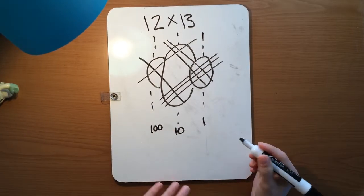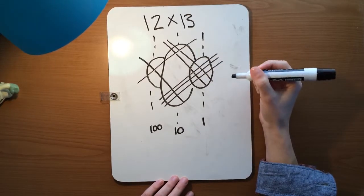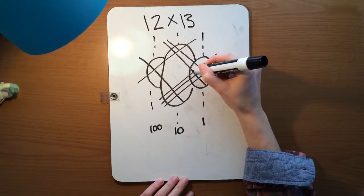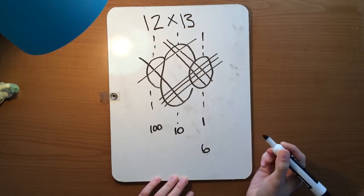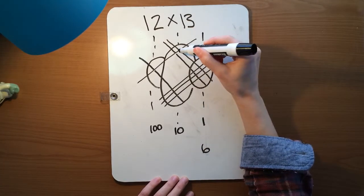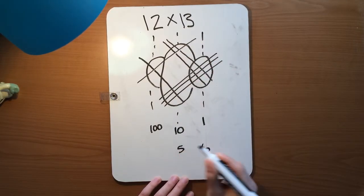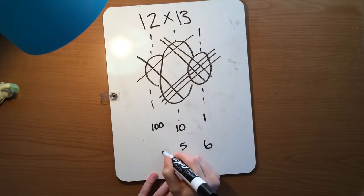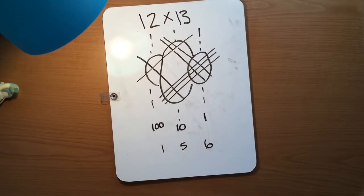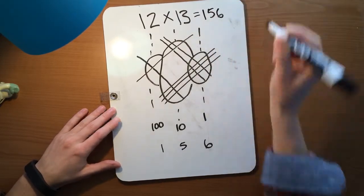How to solve this problem now is we'll go ahead and count the number of intersections in each of these circles. So for the ones place, we have 1, 2, 3, 4, 5, 6. We'll write a 6 down here. In the tens place, we have 1, 2, 3, 4, 5. We'll go ahead and write a 5. And in the hundreds, you can see we only have 1. So our answer here, 12 times 13, is 156.